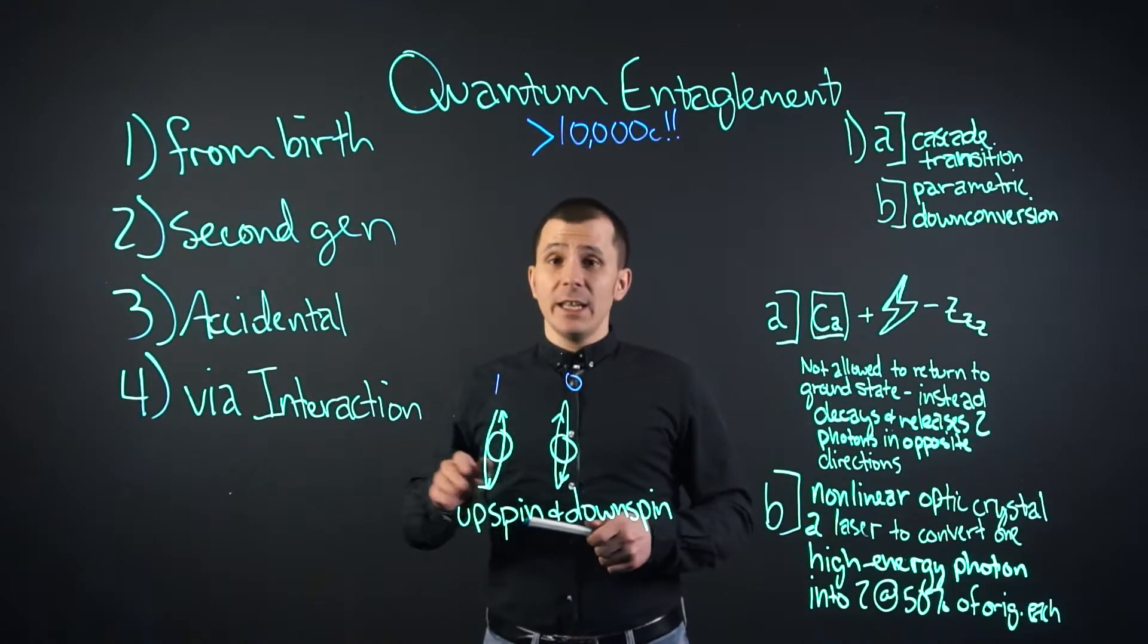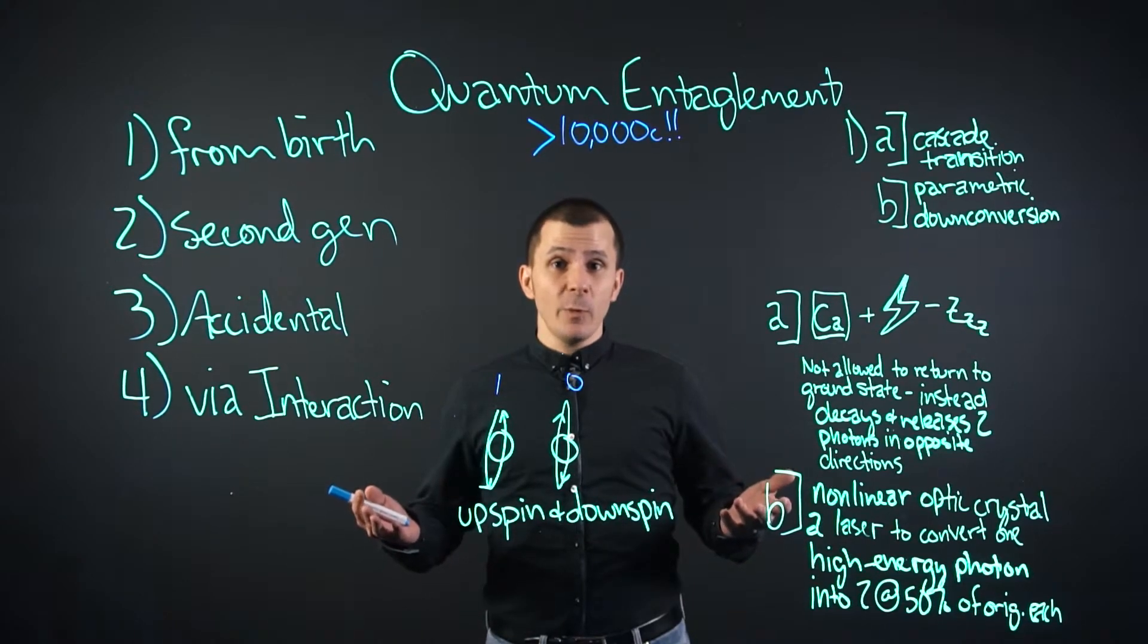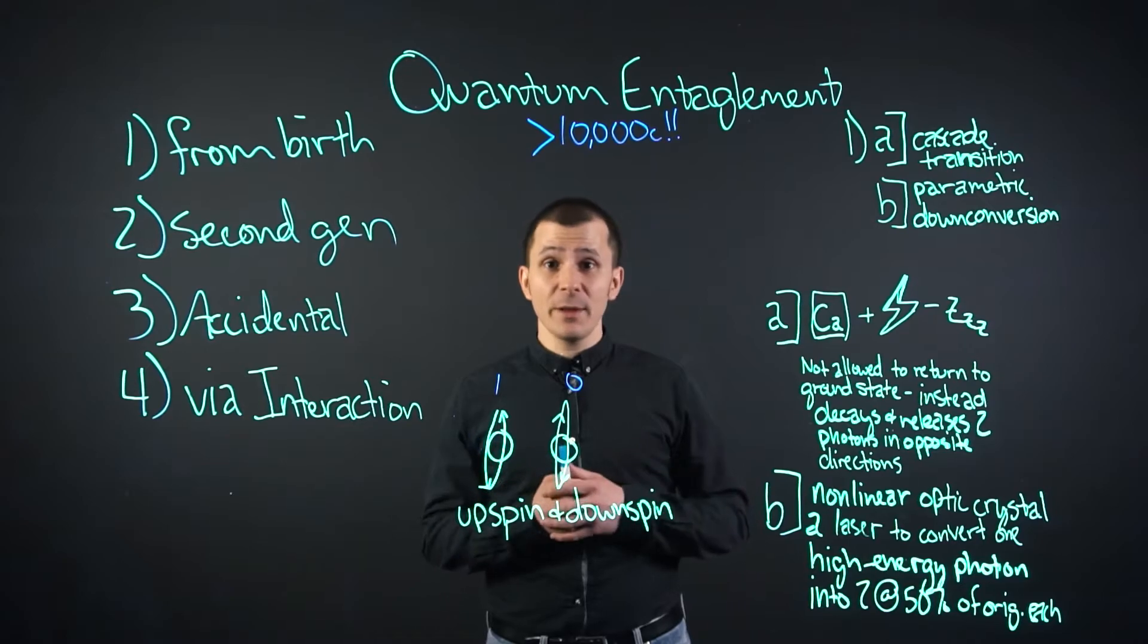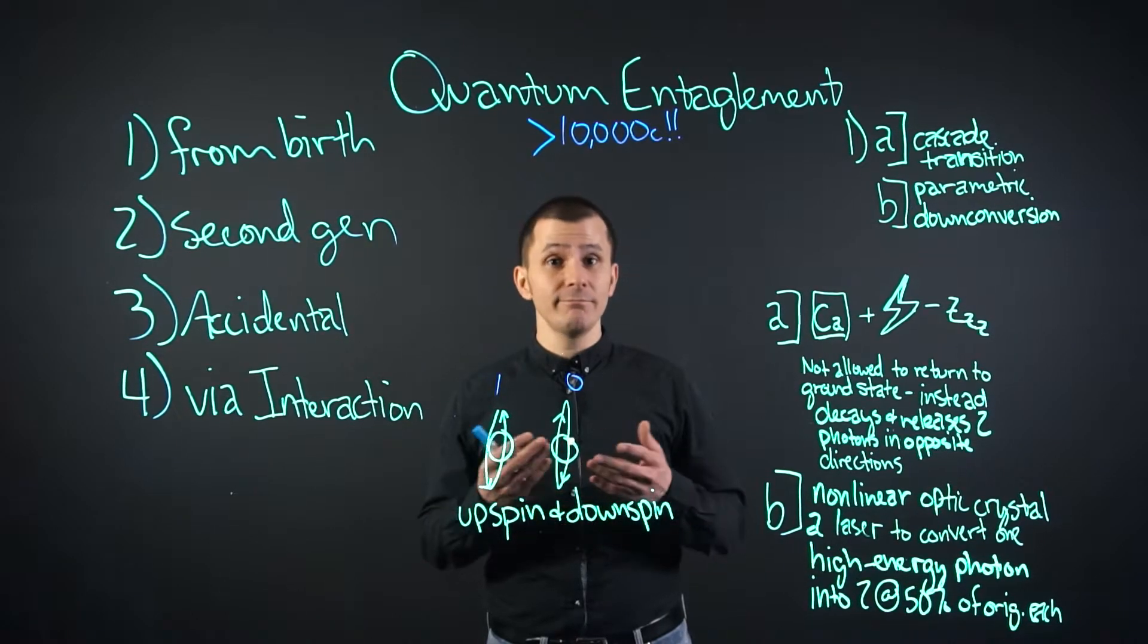The last one is via interaction. Basically, when you cause two atoms to interact with each other and force them to depend on each other, thereby becoming entangled.